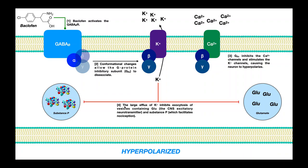Overall, this large efflux of potassium — which hyperpolarizes the entire neuron — and inhibiting calcium influx together inhibit exocytosis of vesicles containing glutamate, the central nervous system excitatory neurotransmitter. And it also inhibits the exocytosis of substance P.